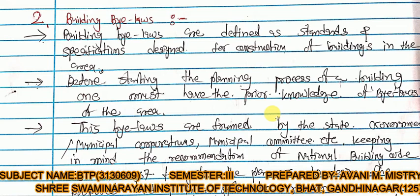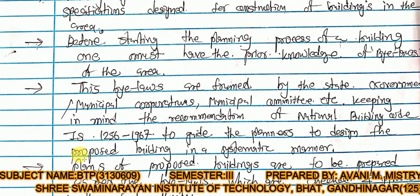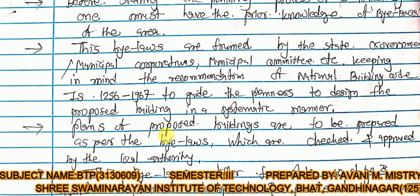These bylaws are framed by the state government, municipal corporation, municipal committee, etc., keeping in mind the recommendations of the National Building Code IS 1256:1967, to guide planners to design the proposed building in a systematic manner. The plans of proposed buildings are to be prepared as per the bylaws, which are then checked and approved by the local authority.